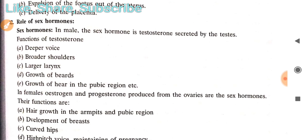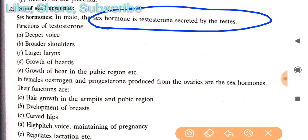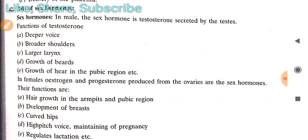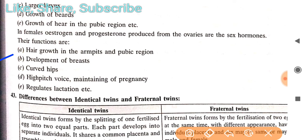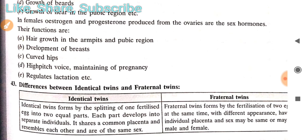The roles of sex hormones: in males, testosterone is secreted mainly by the testes. Its functions include deeper voice, broader shoulders, larger larynx, growth of beard, and hair growth in the pubic region. In females, estrogen causes hair growth in armpits and pubic region, breast development, curved hips, high-pitched voice, and it maintains pregnancy and regulates lactation.